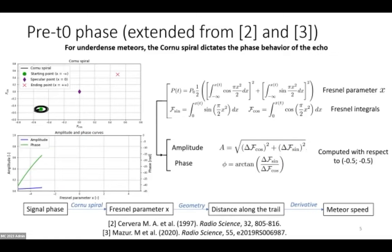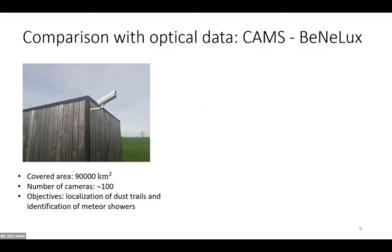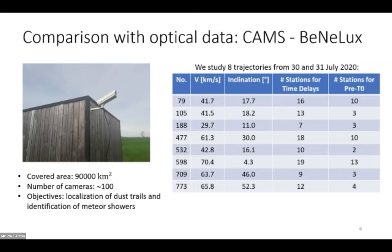To validate our results, we compare our reconstructions with optical data coming from the CAMS Benelux network. So far, we studied a small sample of trajectories coming from July 2020. You see here their identification number in the first column, then their velocity, their inclination, and then the number of BRAMS stations which we use for time delays computations and the number of BRAMS stations which give phase information which are exploitable for extracting the meteor speed.